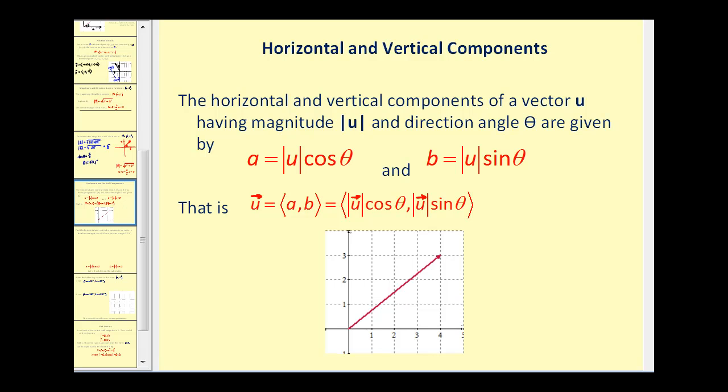Let's talk about the horizontal and vertical components again. The horizontal and vertical components of a vector u having magnitude |u| and direction angle θ are given by a = |u|cos θ and b = |u|sin θ. Therefore, we can find the position vector using this formula.